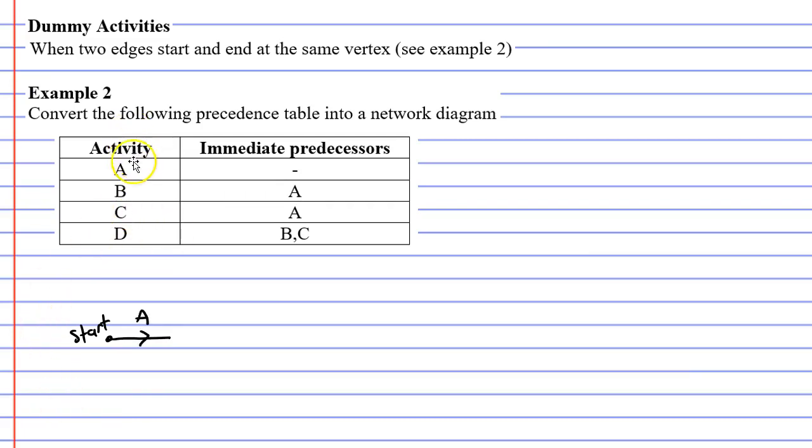You might notice that both activities B and C come after activity A. So we need to complete activity A with a vertex, and both activities B and C come out from that vertex.